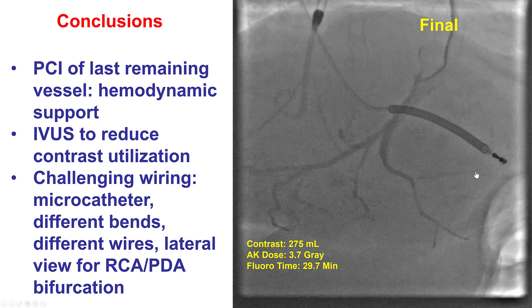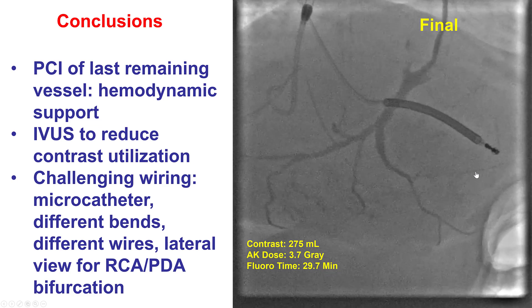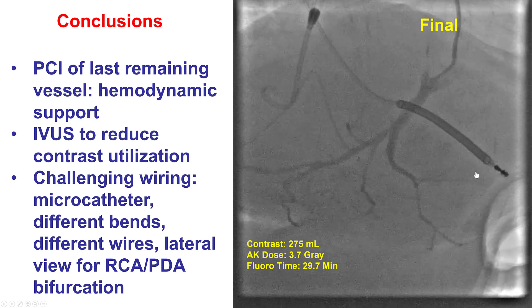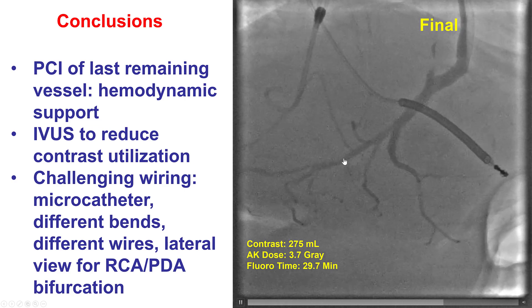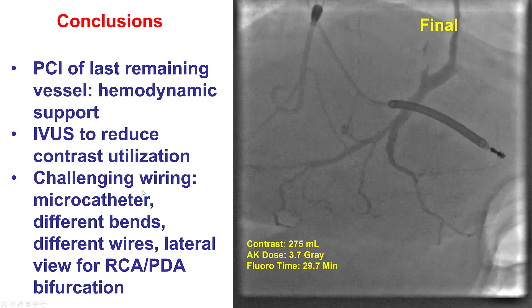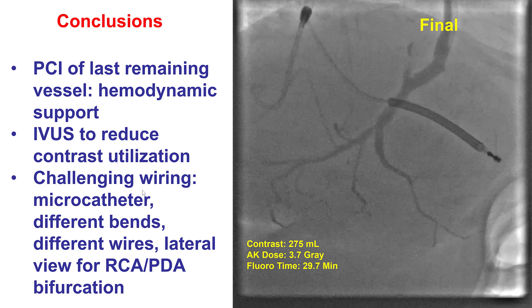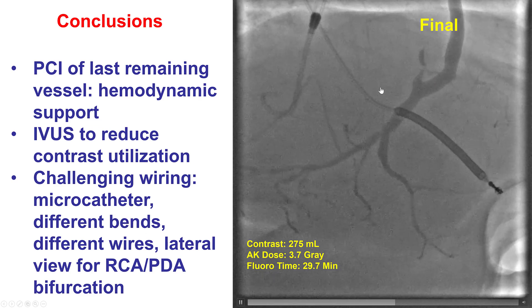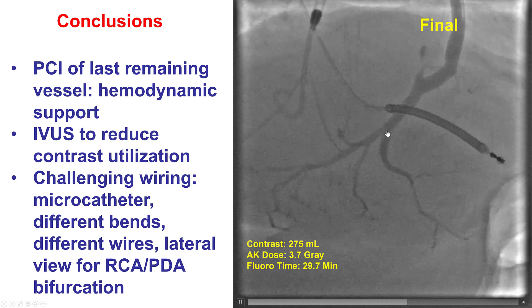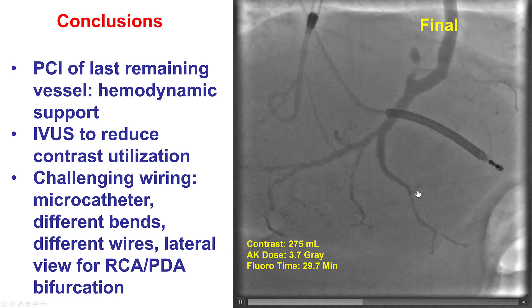Several lessons from this case: First, in patients with complex high-risk PCI and low ejection fraction — especially if wedge pressure is high — hemodynamic support can be useful. Second, IVUS can help reduce the need for contrast, although we clearly didn't do a very good job here with 275 mLs of contrast being used. Third, when dealing with challenging guide wire advancement, changing the view can be a very useful technique. In this case, we changed the guide wire, changed the bend, and used a microcatheter, but it was only when we changed to the lateral projection — very useful for the right coronary mid and distal — that we were able to advance the guide wire into the PDA and complete our procedure. Thank you.